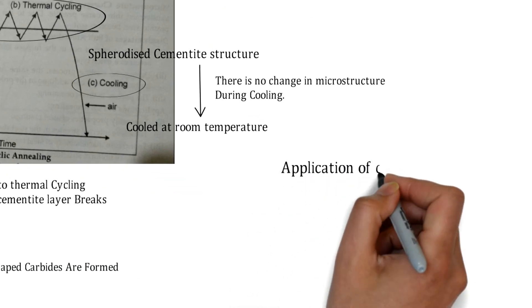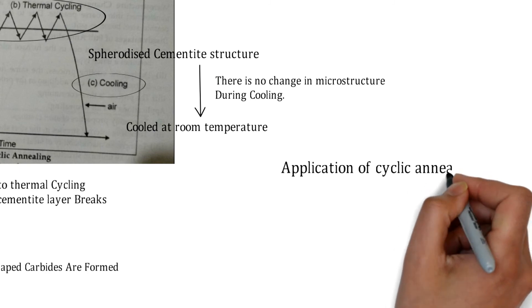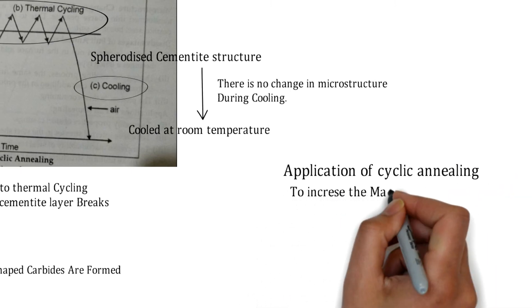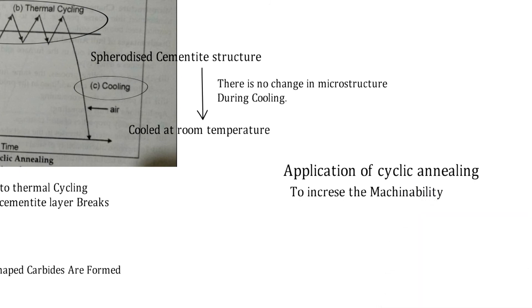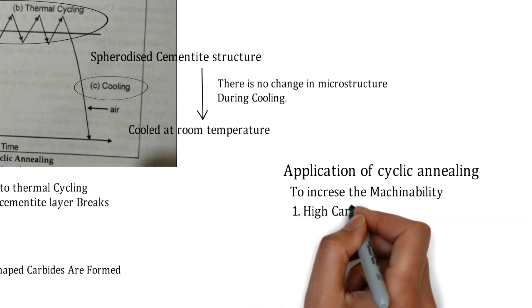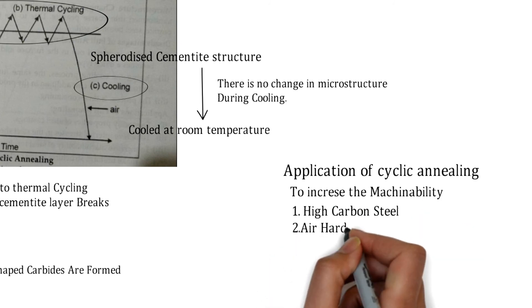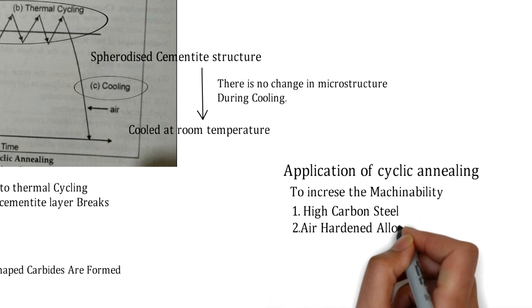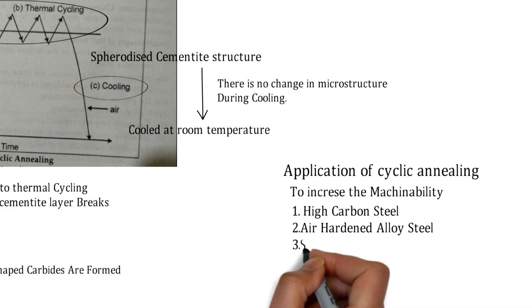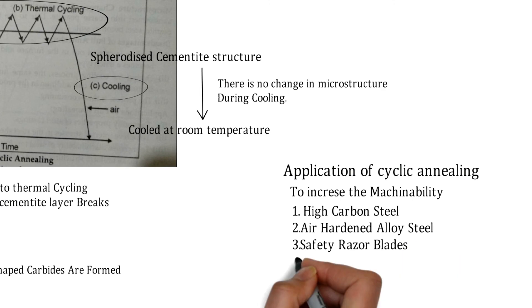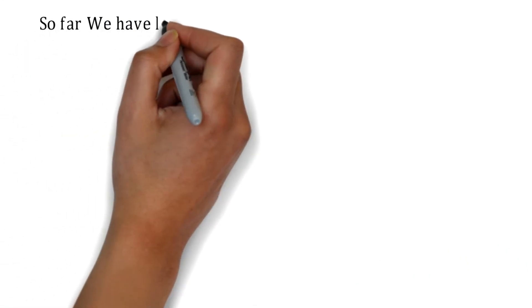The applications of cyclic annealing or spheroidizing include: increasing the machinability of high carbon steels and air-hardened alloy steels, as well as manufacturing safety razor blades and needles.